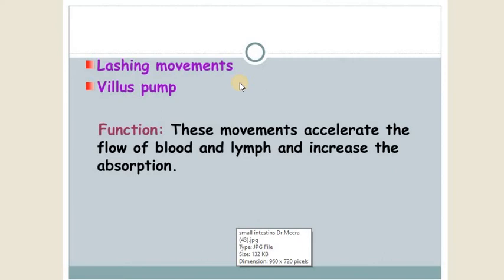There are two types of movements of villi: lashing movement and villus pump. In the first movement, the side-to-side movement, the villi shows independent movement in one direction.